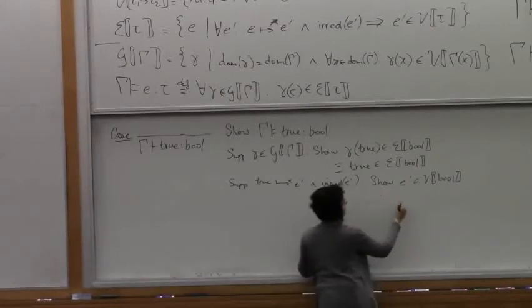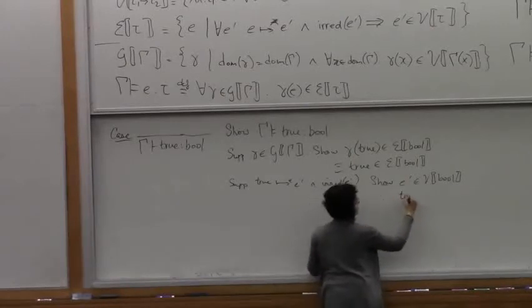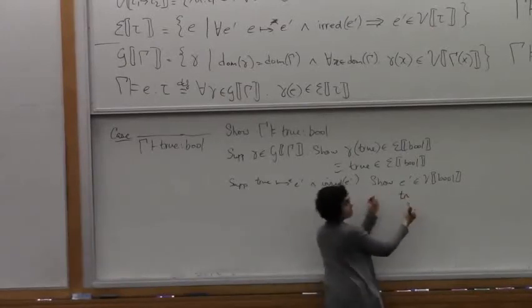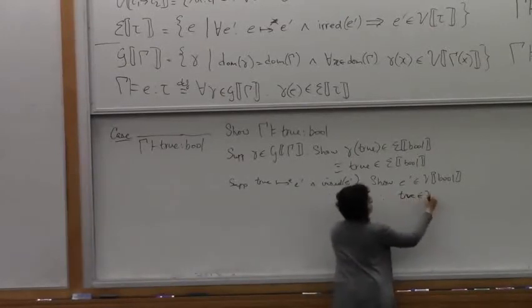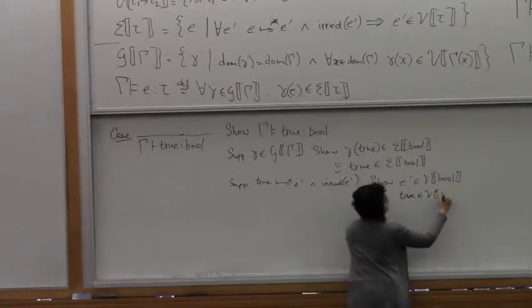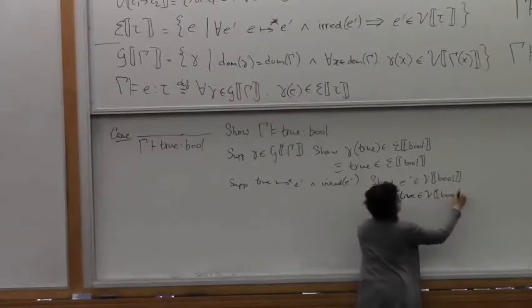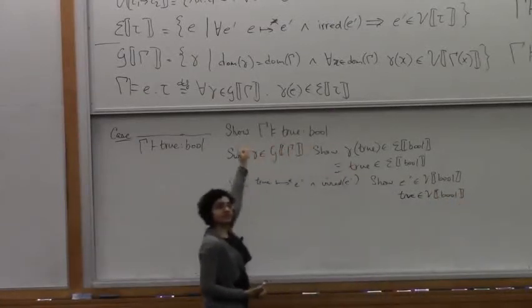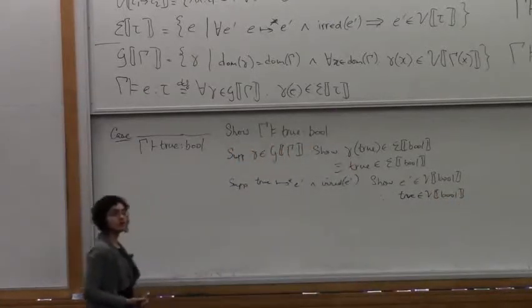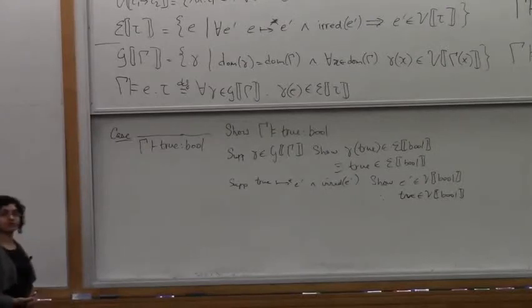Therefore, all we need to show is, since E prime is true, we just need to show that true belongs to V of bool, which is immediate from the definition of the value interpretation of bool.